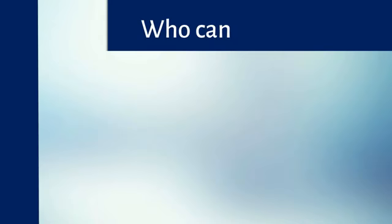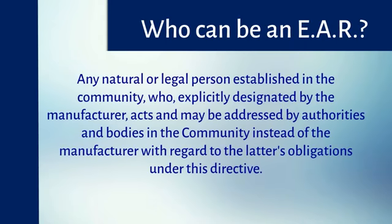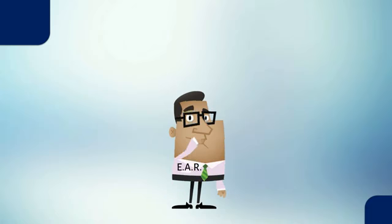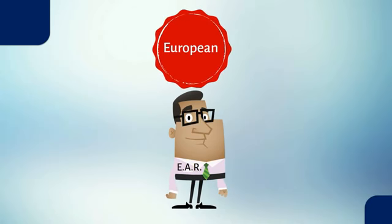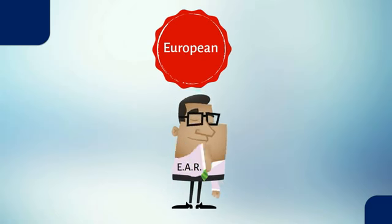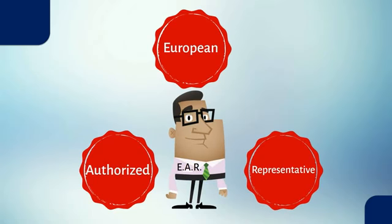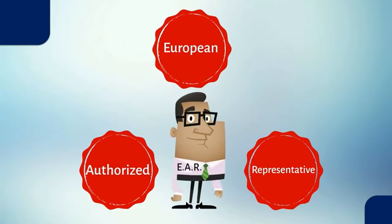Who can be an EAR? In short, the EAR must be European — meaning he must be established in the community. Authorized means he is designated by the manufacturer. Representative means he agreed to represent the manufacturer.